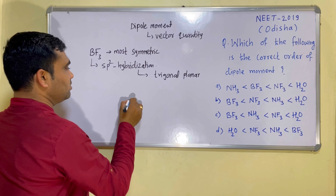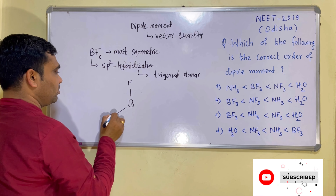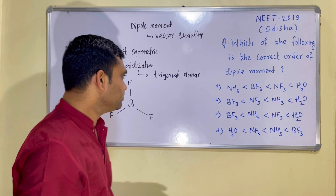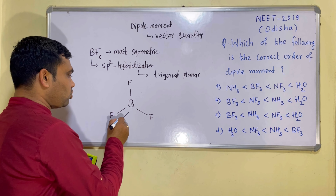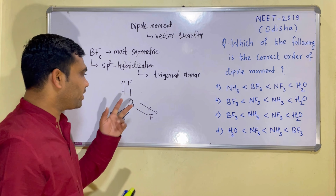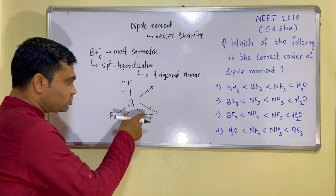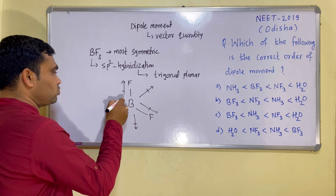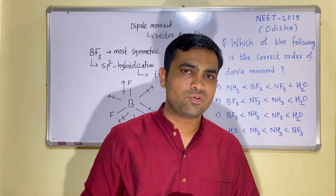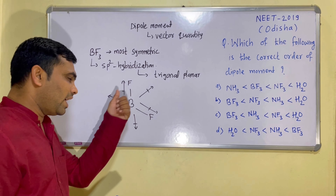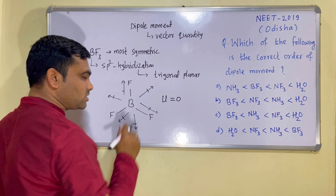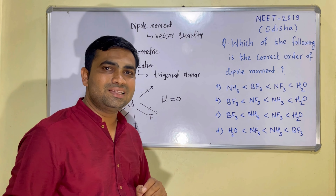As BF3 is trigonal planar, the structure has boron at the center with three fluorine atoms, and the bond angle between the boron-fluorine bonds is 120 degrees. The dipole moment vectors point toward the fluorine atoms, and according to the triangle law of vector addition, the vectors cancel out due to symmetric distribution of electron cloud around boron. Therefore, BF3 has zero dipole moment — the least among the given molecules.